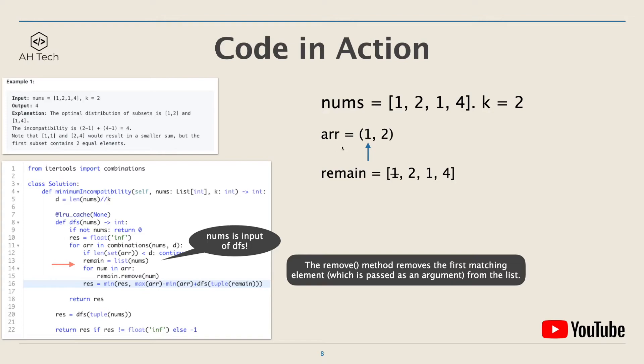Here I called the subset arr. We loop through arr and remove each element from the remain array using the Python remove method. Notice that the Python remove method will only remove the first matching element from the list.